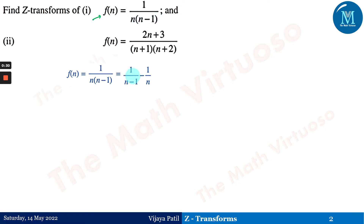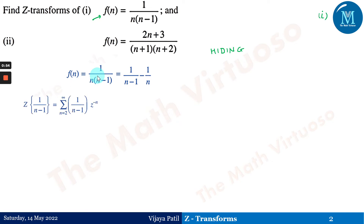Please refer to the playlist from the channel for partial decomposition or partial fractions. I've given you a shortcut method using the hiding method for partial fractions. I'm not spending time on that here in this session. Moving ahead, we'll try to find the Z-transform of 1/(n-1) and 1/n.